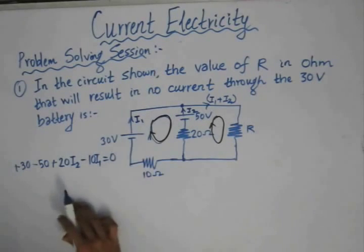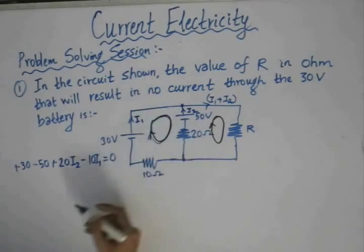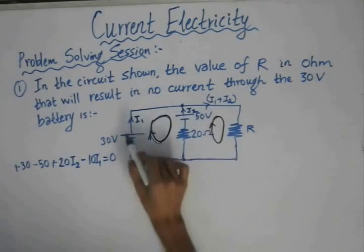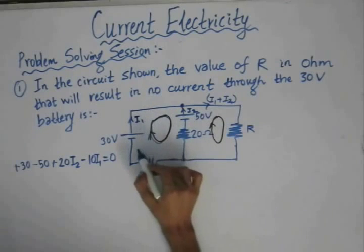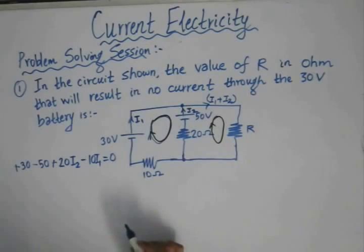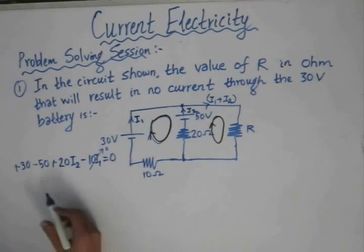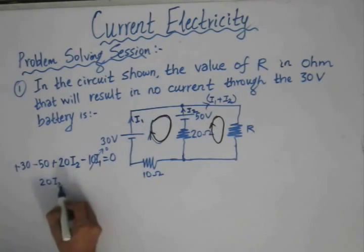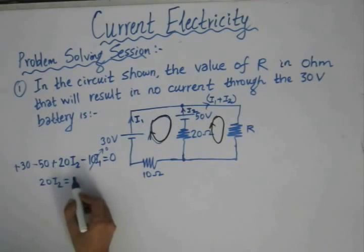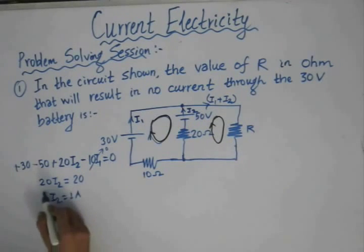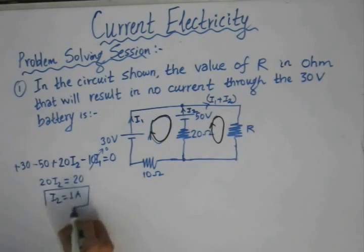We have applied Kirchhoff's voltage law to the first loop. From the given data, there is no current across the 30V battery, meaning I1 equals zero. Substituting I1 equals zero, we get 20·I2 equals 20, which gives I2 equal to one Ampere.